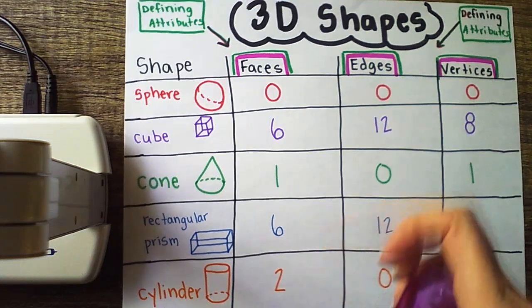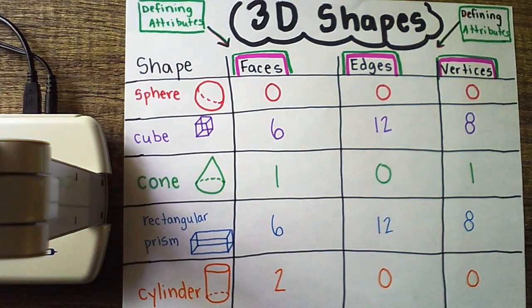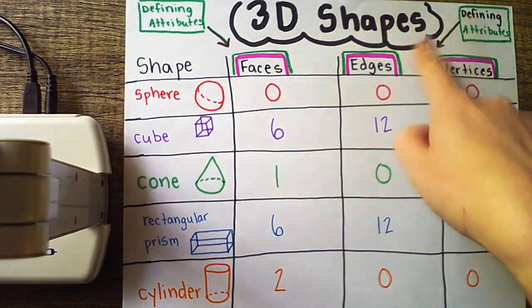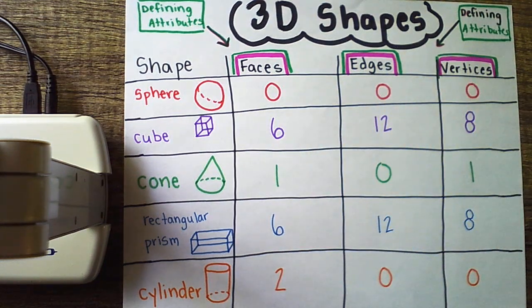I'm going to show you today a variety of 3D shapes. And we're just going to put some together to make something different. And after we create our structure, we have to be able to name which 3D shapes that we used. And we'll know what we used based on their defining attributes, their faces, their edges, and their vertices. So let me show you what I'm talking about.